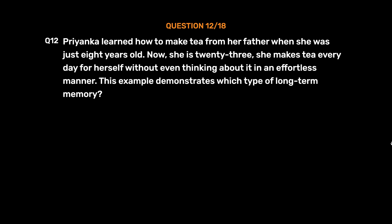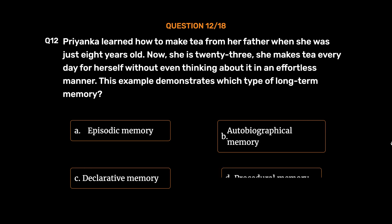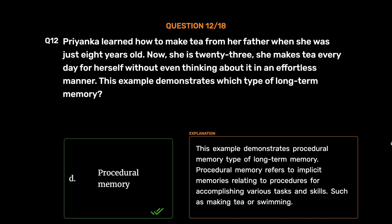Question number 12. Priyanka learned how to make tea from her father when she was just 8 years old. Now she's 23 and makes tea every day without even thinking about it in an effortless manner. This example demonstrates which type of long-term memory? Option A: Episodic memory. Option B: Autobiographical memory. Option C: Declarative memory. Option D: Procedural memory. The correct answer is Option D, Procedural memory. Procedural memory refers to implicit memories relating to procedures for accomplishing various tasks and skills, such as making tea or swimming.